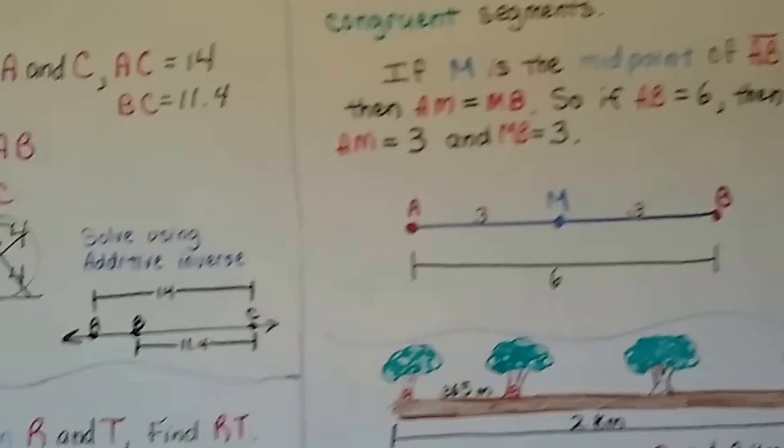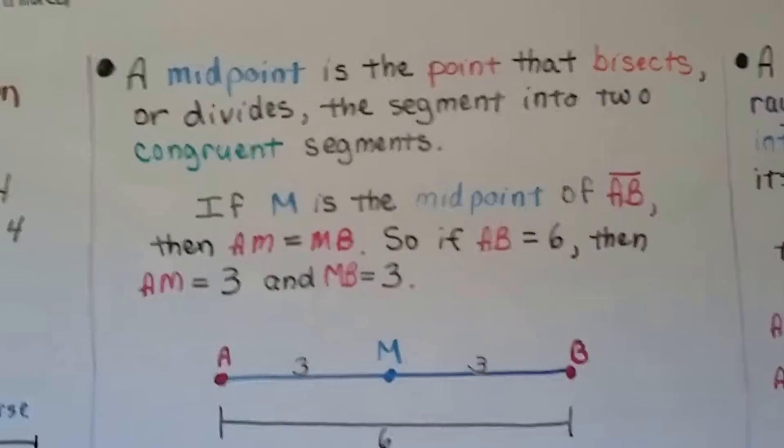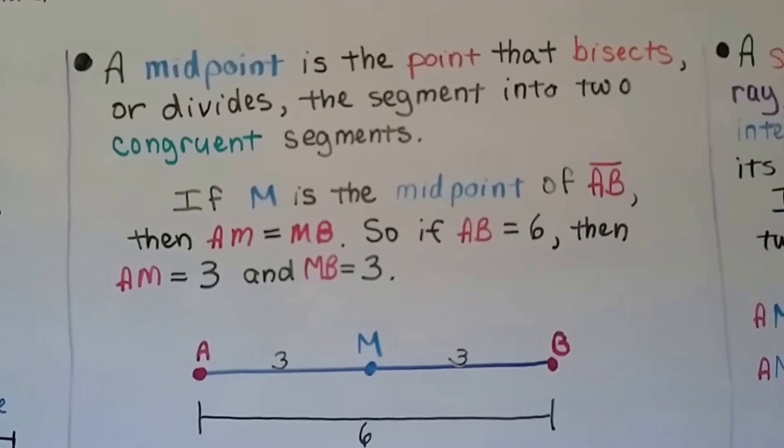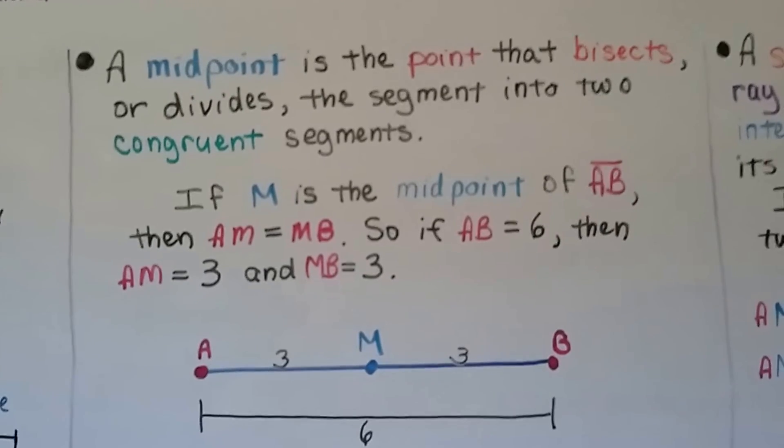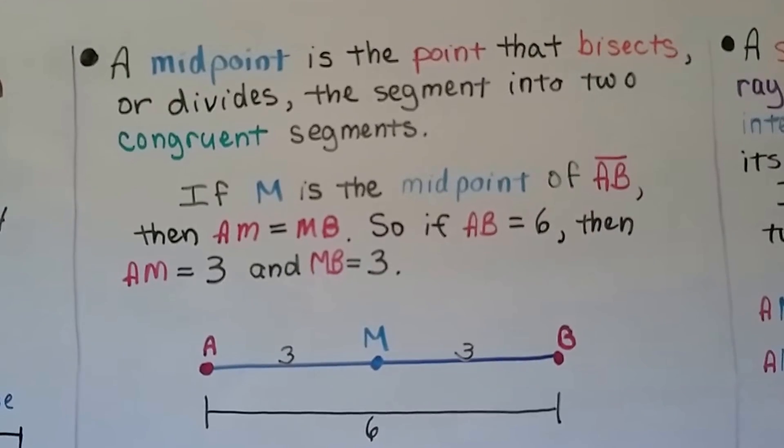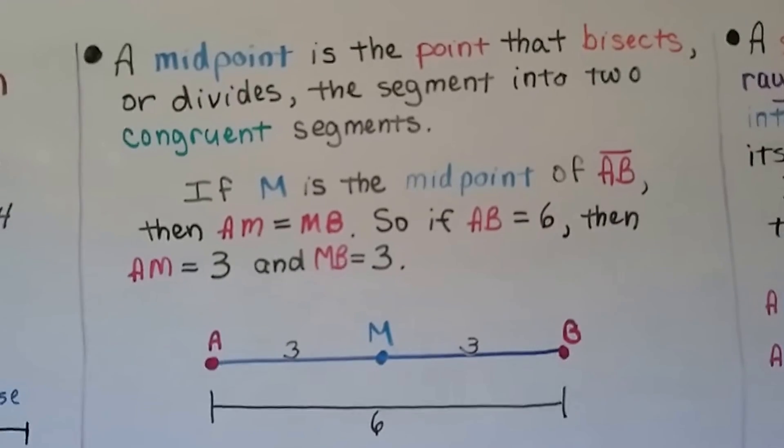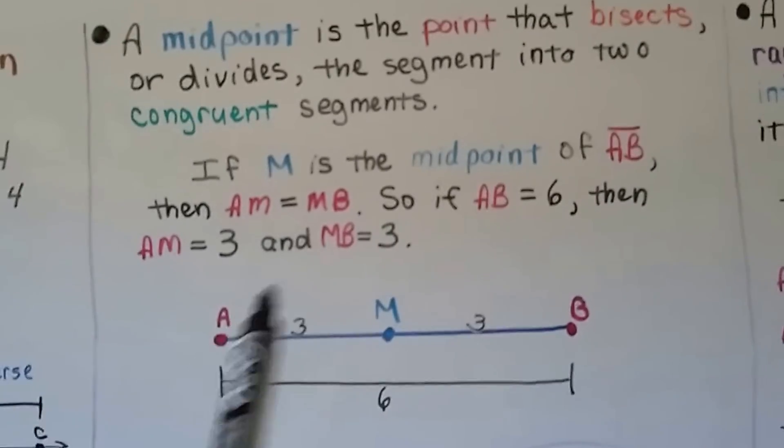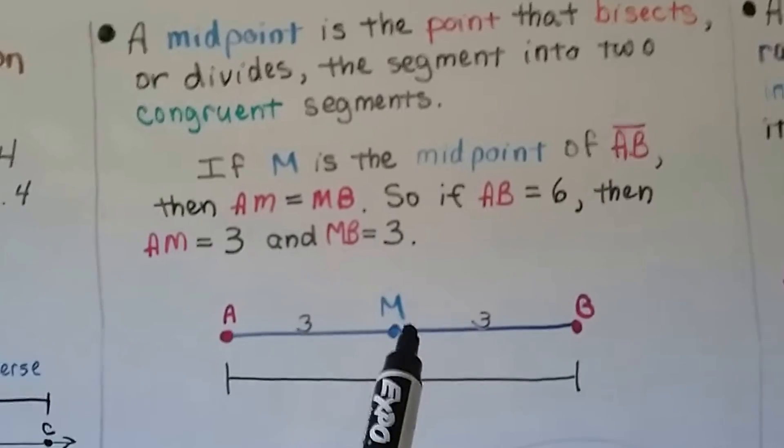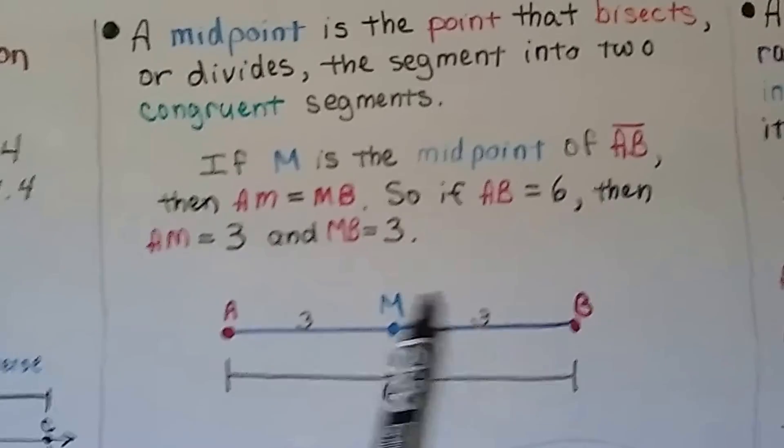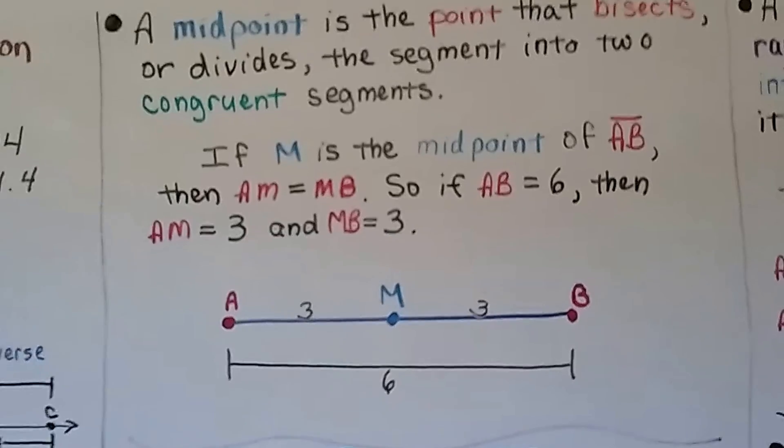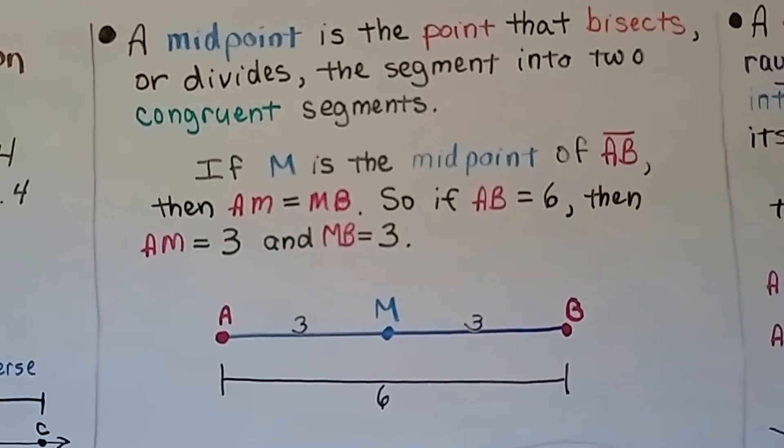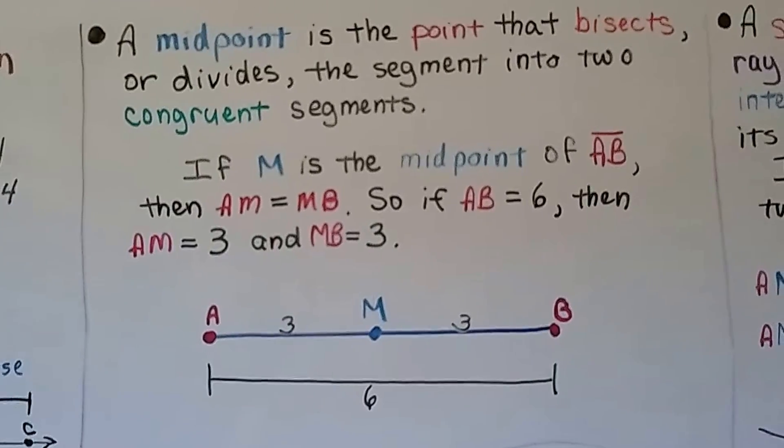Let's try another one. A midpoint is the point that bisects or divides the segment into two congruent segments. So the midpoint is the dead center. If M is the midpoint of segment AB, then AM equals MB. If M is the midpoint between these two, if it's dead center, then this AM plus this MB equals AB, the whole thing. So if AB is 6, if the whole thing is 6, that means AM is 3 and MB is 3.